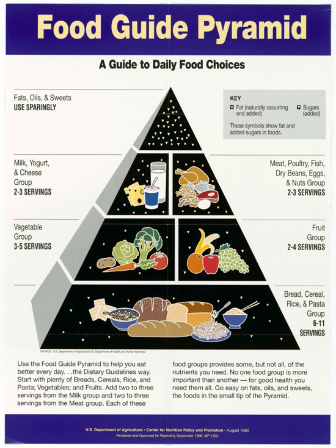Similarly, veteran bartenders tend to pour 26% more liquor into short, wide glasses versus tall, narrow glasses. This may be explained in part by Piaget's vertical-horizontal illusion, in which people tend to focus on and overestimate an object's vertical dimension at the expense of its horizontal dimension, even when the two dimensions are identical in length. In addition, larger bowls and spoons can also cause people to serve and consume a greater volume of food, although this effect may not also extend to larger plates.